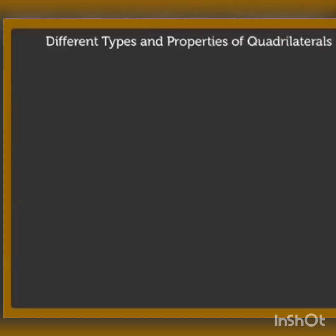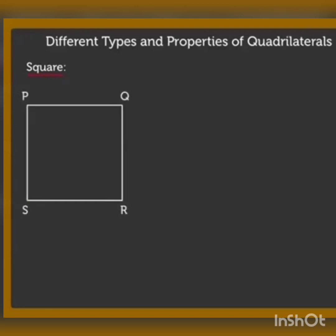The different types of quadrilaterals we have learned are: square, rectangle, parallelogram, rhombus, and trapezium.